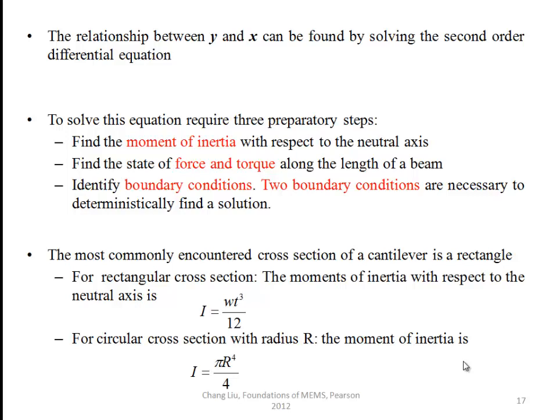The most commonly encountered structure in the case of cantilever has a rectangular cross section. For rectangular cross section, the moment of inertia I equals wt³/12, where w is the width and t is the thickness.